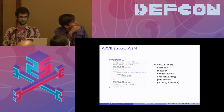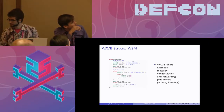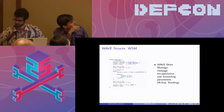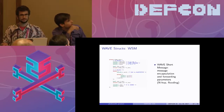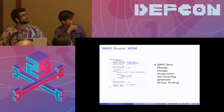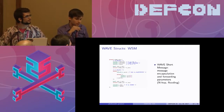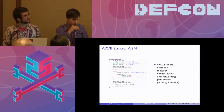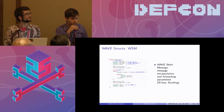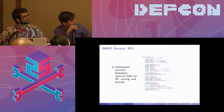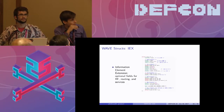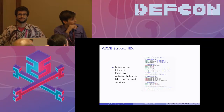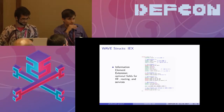Here is the WAVE short message struct — a pretty simple definition. You have subtype, version, TPID, and then the N-header information element extension, which is just a block of extra information regarding things like location, heading, RF transmission power, and data rate. Moving on is the actual information element block, which contains optional fields for the RF parameters, the routing, external DNSs, and various services potentially provided by the actual peer.